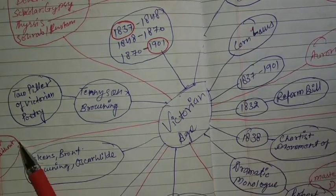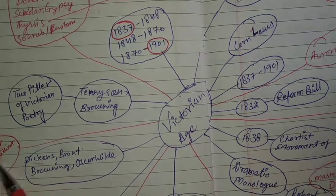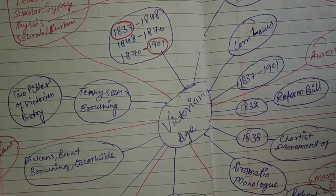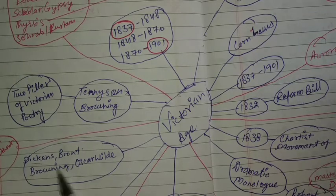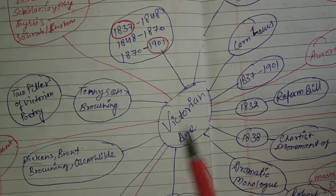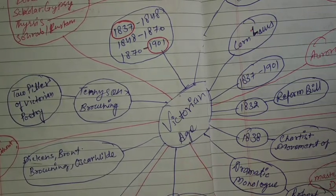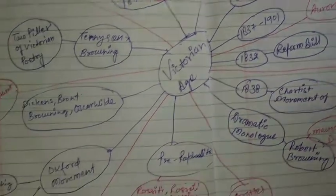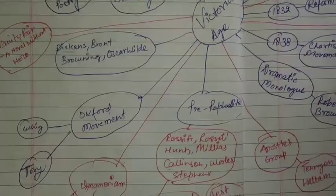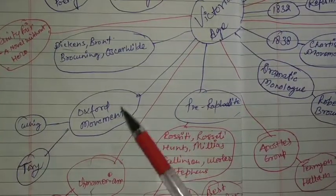Vanity Fair is described as a novel without a hero — this is a great work. Dickens, Brontë, Browning, and Oscar Wilde are important writers to remember when talking about Victorian age.